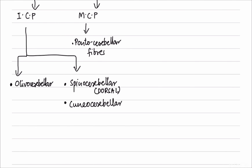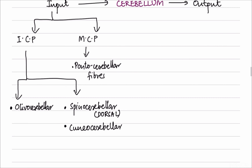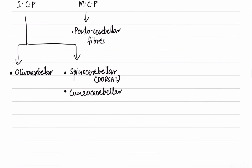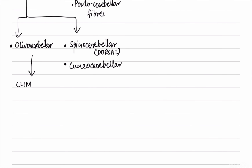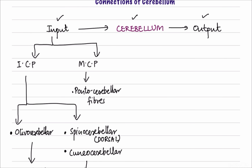The input fibers are classified into two types. Fibers from the inferior olivary nucleus are called climbing fibers, named for their nature of climbing along Purkinje cells. Spinocerebellar and other fibers are called mossy fibers, named for their branching pattern. Within the cerebellum these inputs excite or inhibit the different layers of the cerebellar cortex. The cerebellar cortex then activates or inhibits the deep nuclei, which give out the output. The outputs mainly pass through the superior cerebellar peduncle.